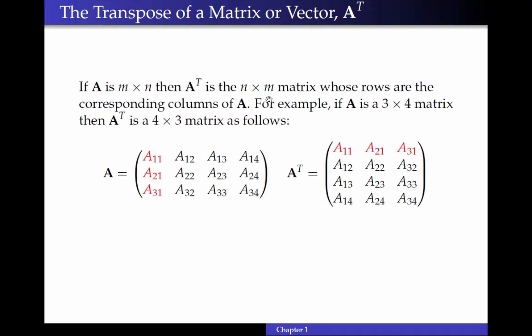Let's see an example. Here I have a matrix A that's 3 by 4, while A transpose is a matrix that's 4 by 3 where the corresponding rows are the columns of A. Similarly, I could say that the columns of A transpose are the corresponding rows of A. So all we do is switch the rows and columns.